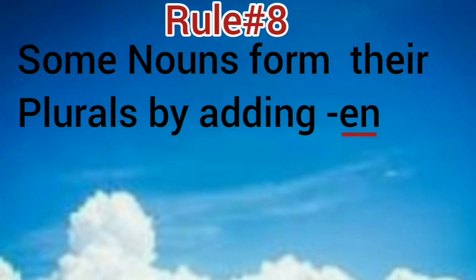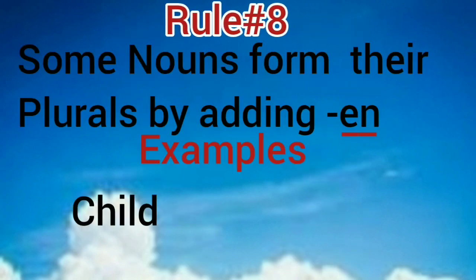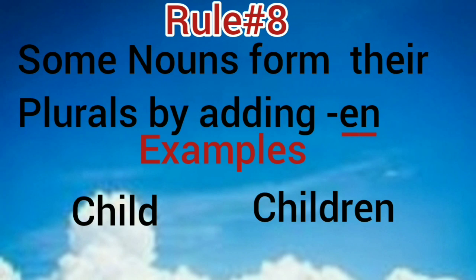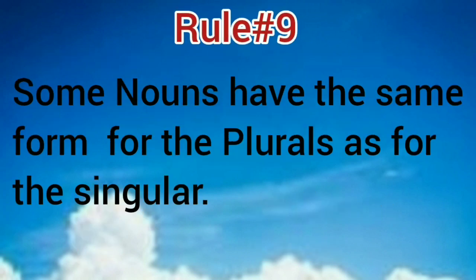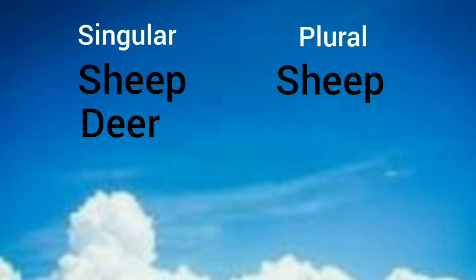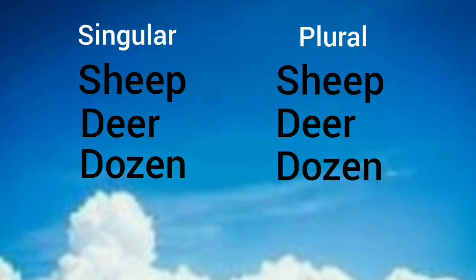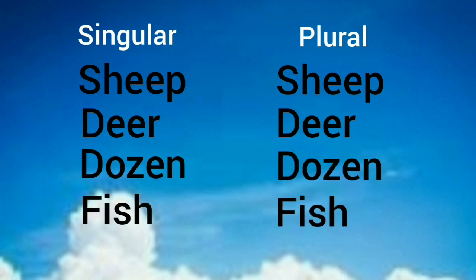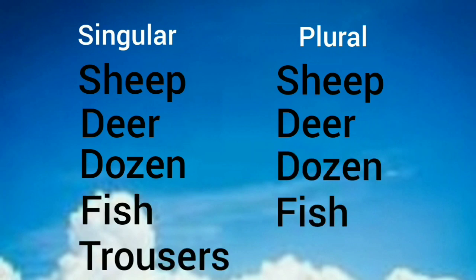Some nouns form their plurals by adding -en: child-children, ox-oxen. Some nouns have the same form for both singular and plural. Examples: sheep-sheep, deer-deer, fish-fish.